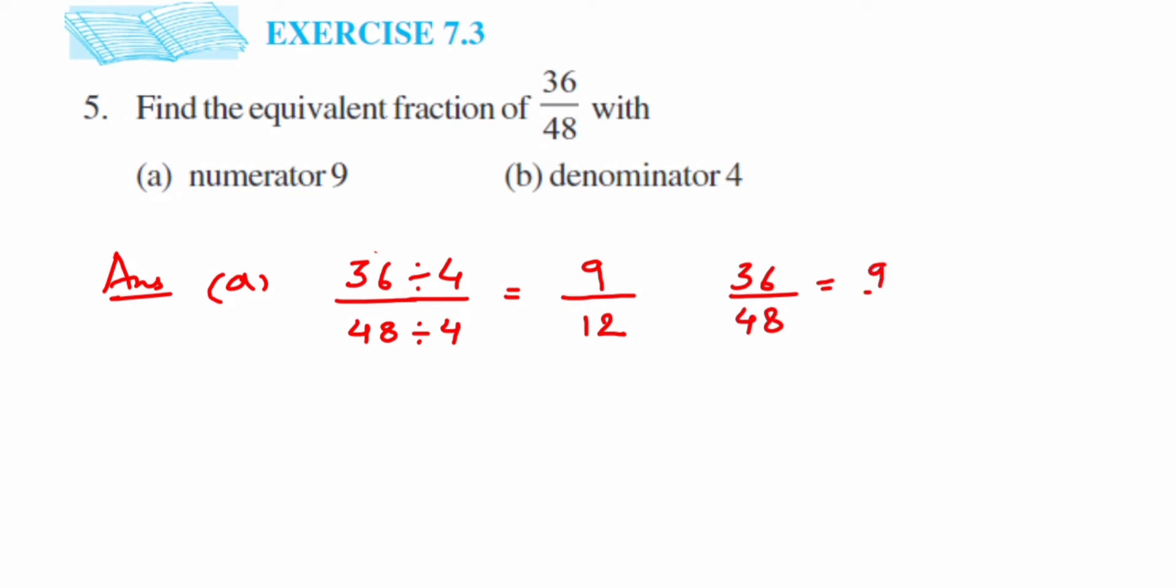Now you might be thinking, how did we get this 4? If you don't know how to find the answer, it's quite simple. We know that 36/48 is equal to 9 over something. We don't know what the denominator is, so let's call it x.